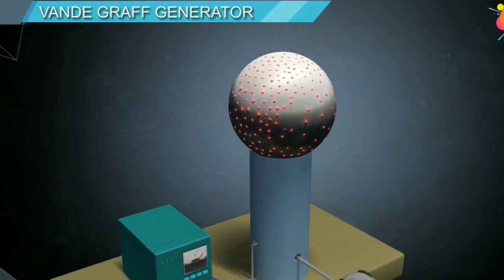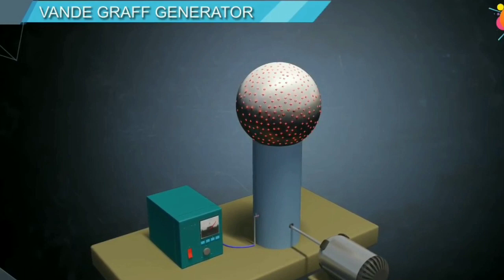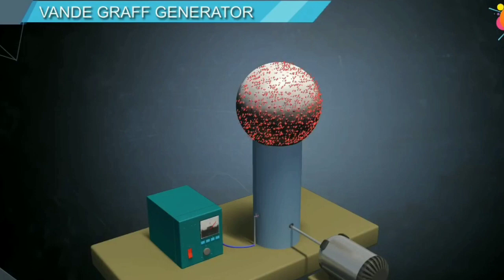Since the belt continuously carries positive charge to the receiver comb, the spherical shell collects an enormous amount of charges and develops huge potential. It becomes difficult for the surface to hold more and more charges due to the force of repulsion between the like charges on the dome. When the potential of the spherical shell exceeds the breakdown value of air, air around the sphere gets ionized and leakage of charge takes place from the sphere.